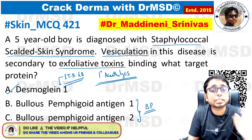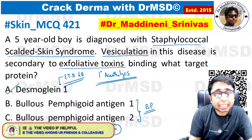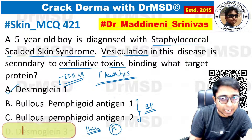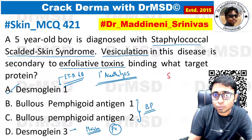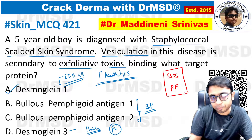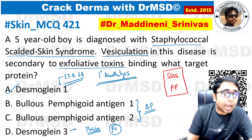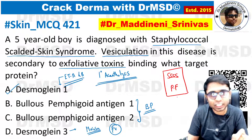There are certain conditions in which desmoglein 3 is not involved. The first is staphylococcal scalded skin syndrome (SSSS), and the other is pemphigus foliaceus. In both of these, desmoglein 3 is not affected.